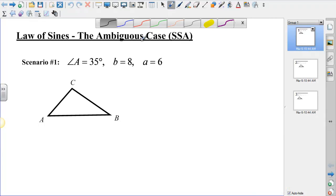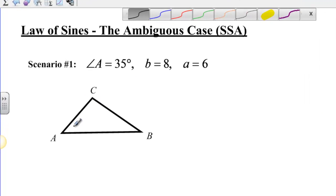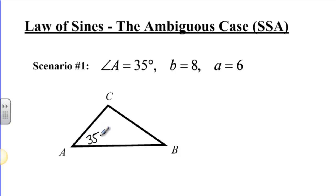So the first one gives us a possibility where angle A is 35 degrees, side B is 8, and side A is 6. So I've just labeled those here on this triangle, and using the Law of Sines, I can now figure out angle B.